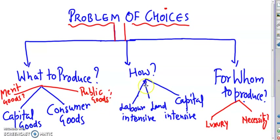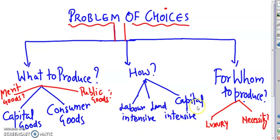Likewise, every economy has to decide on the process as to what resources it should use more. Should it have more of labour-intensive techniques, land-intensive, or capital-intensive? Meaning, what resource do we need to use more to do the production?